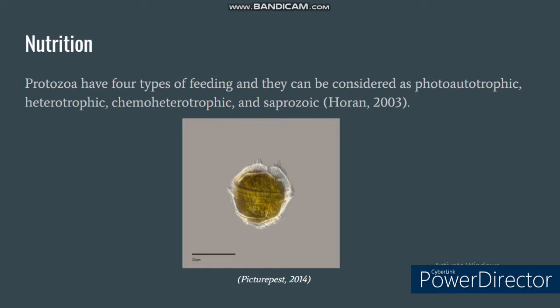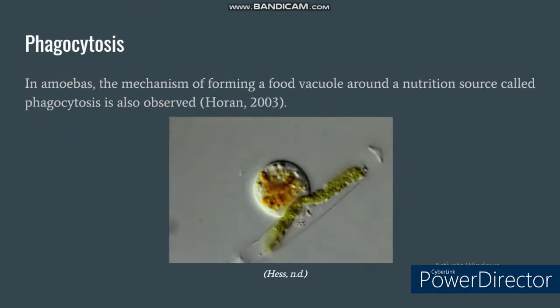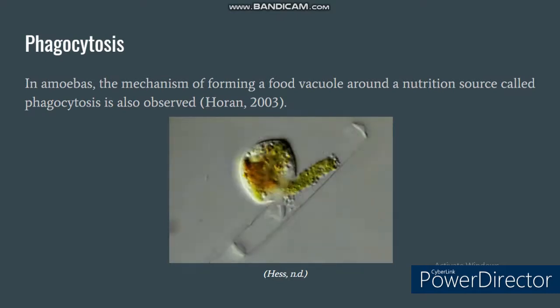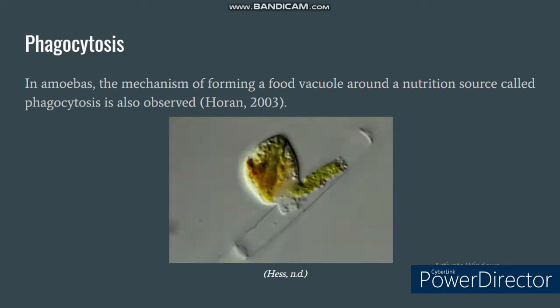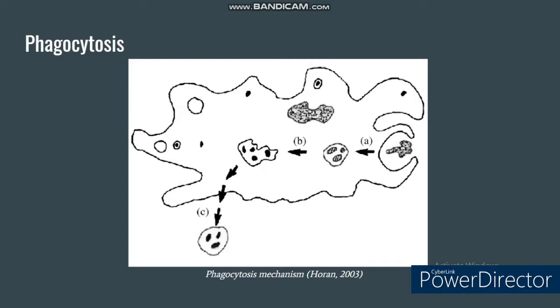Species belonging to protozoa have four types of feeding and they can be considered as photo-autotrophic, heterotrophic, chemo-heterotrophic, and saprozoic. For instance, in photo-autotrophic microorganisms, they use chloroplasts which can be seen on the green structures of the dinoflagellate in the figure. These green structures function in harnessing light energy that can be converted into chemical energy. In amoebas, phagocytosis — which is a mechanism of forming a food vacuole around a nutrition source such as solid food particles or bacteria — is also observed. The process of phagocytosis begins with the utilization of pseudopodia to engulf the food particle, followed by its digestion with the help of enzymes.